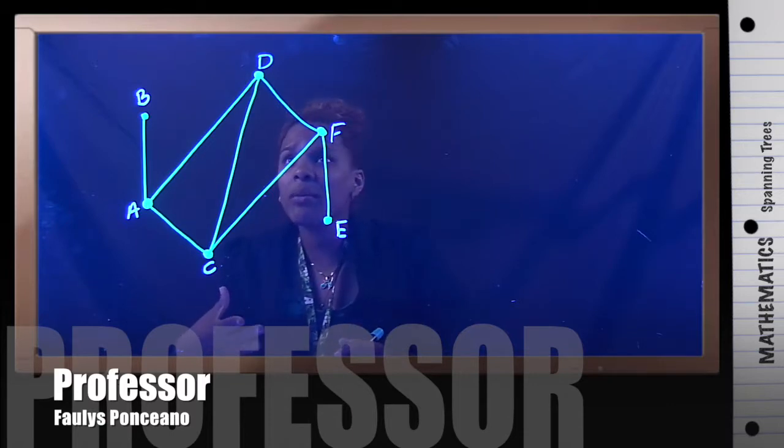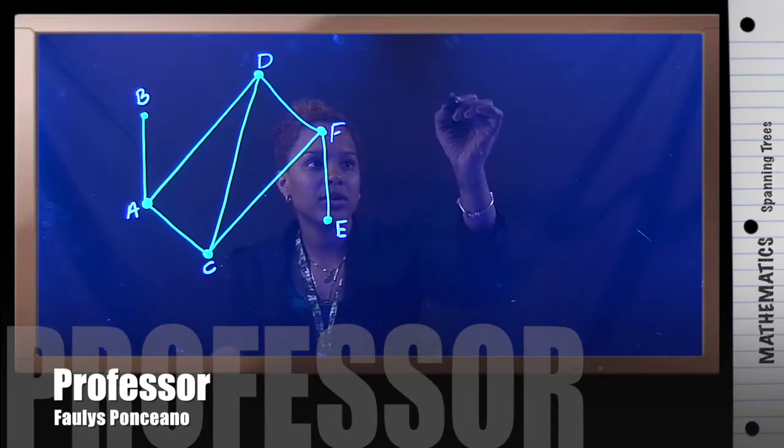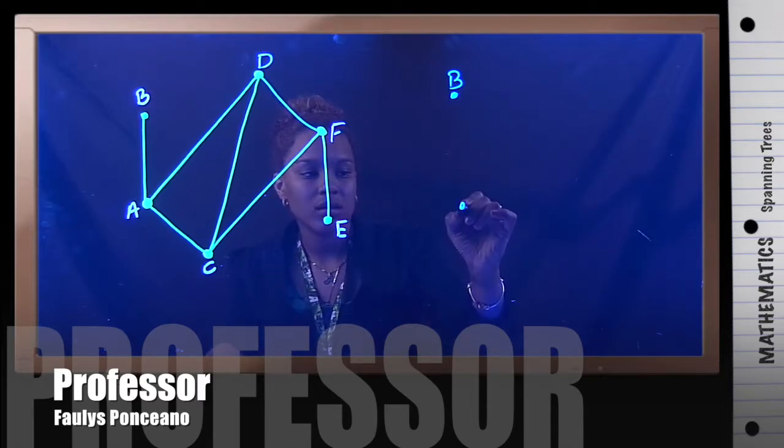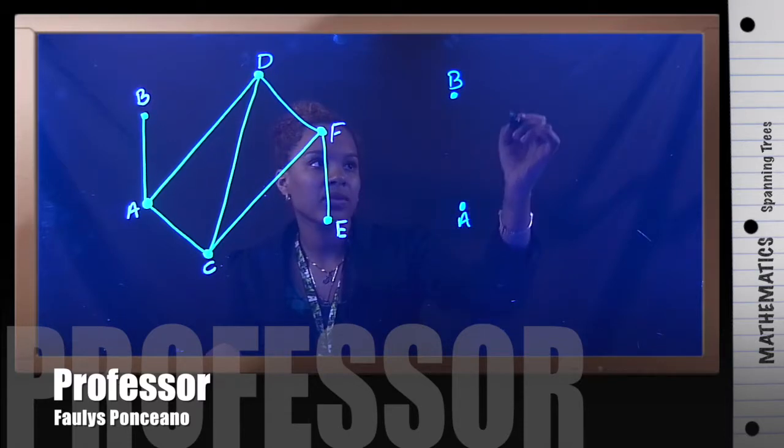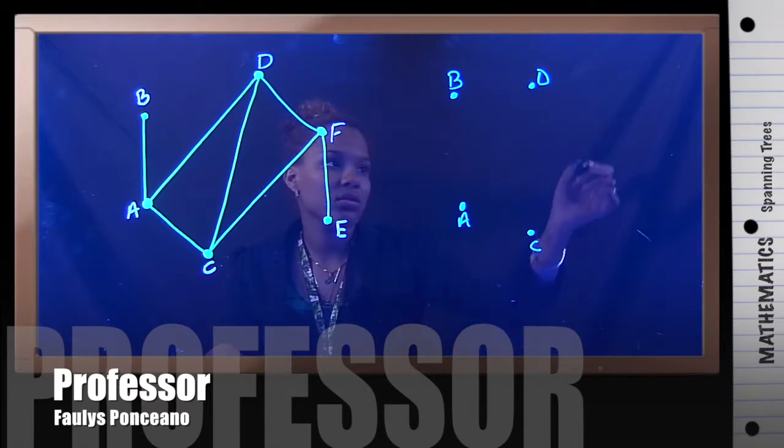So I'm going to start by taking all the vertices that I have here and drawing them over here. So I'm going to have B, I have A, I have D, C, F.